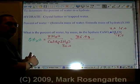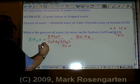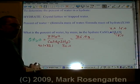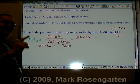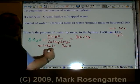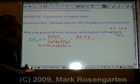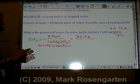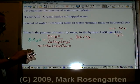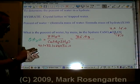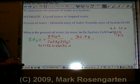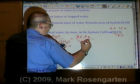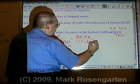What does the calcium sulfate weigh? Calcium weighs 40.1 — check it out on the periodic table. Sulfur weighs 32.1. And the four oxygens at 16 each weigh 64.0. So let's add that up: 40.1 for the calcium, 32.1 for the sulfur, 64.0 for the four oxygens, and 36.0 for the two water molecules.